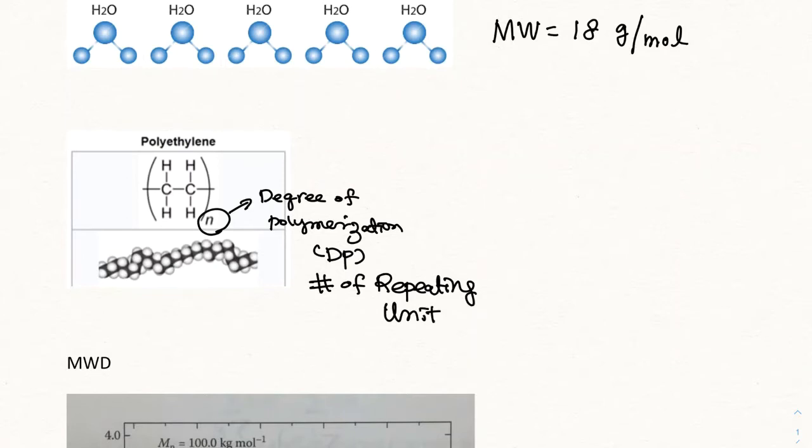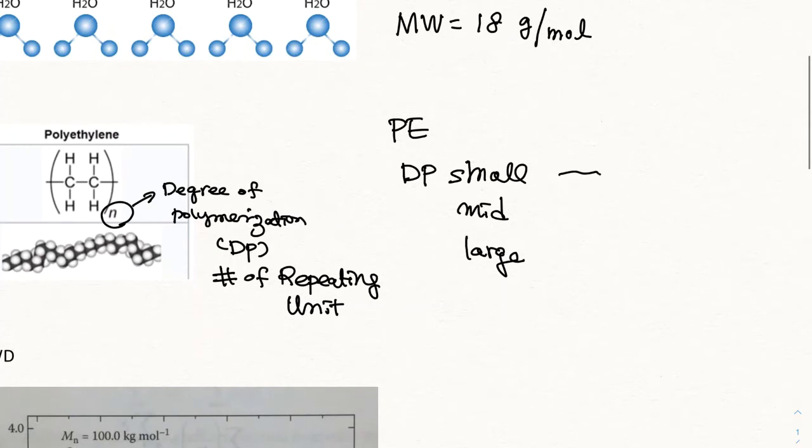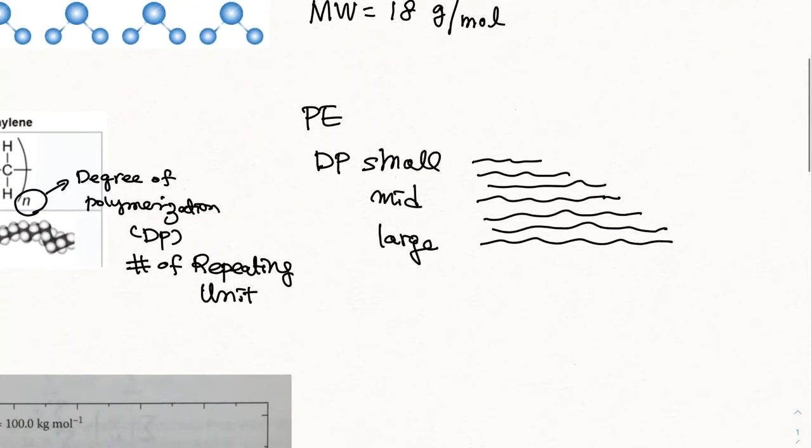And so here is an example of polyethylene, when DP is small, medium, large, and so on. You have a small chain, medium chain, larger chains, and then you have everything in between. So each one has a different molecular weight, and then it will have a different number.